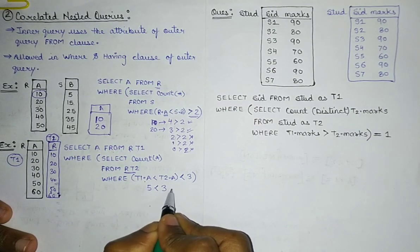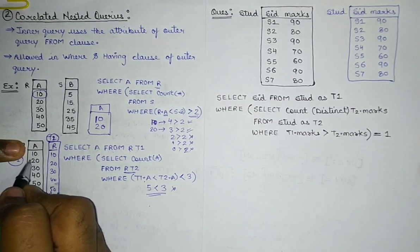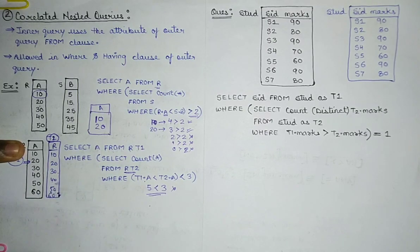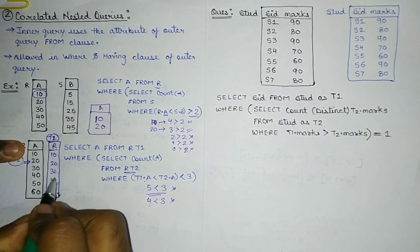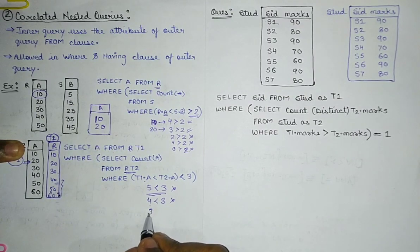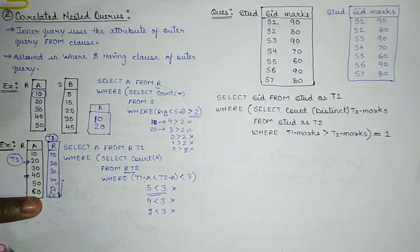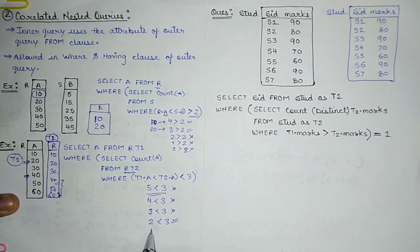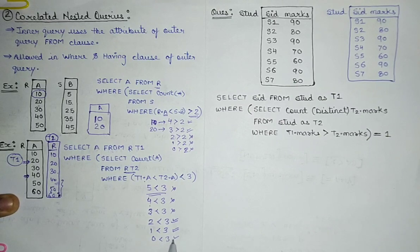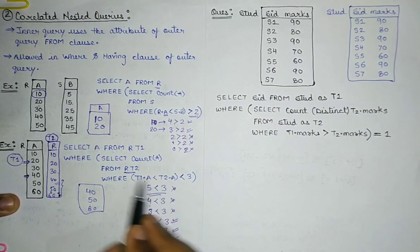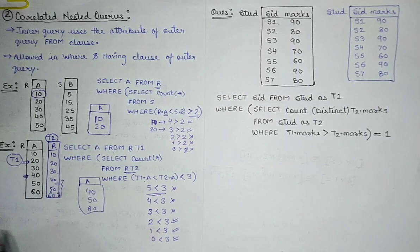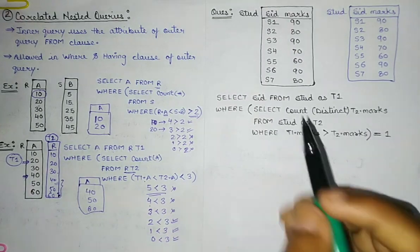Is 5 less than 3? No, so 10 is excluded. For t1.a = 20: 4 values satisfy the condition. Is 4 less than 3? No. For t1.a = 30: 3 values. Is 3 less than 3? No. For t1.a = 40: 2 values — 2 < 3, yes, satisfied. For t1.a = 50: 1 < 3, yes. For t1.a = 60: 0 < 3, yes. So the output is {40, 50, 60}.